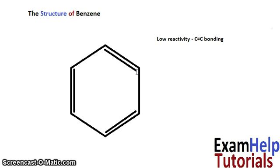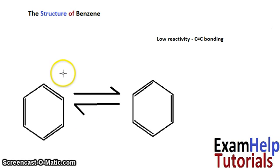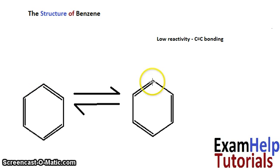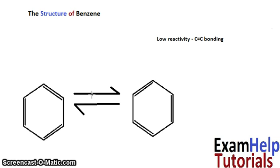What Kekulé proposed to explain this was an equilibrium: a reversible reaction rapidly changing double bonds to single bonds and back again, alternating so fast that bromine doesn't get a chance to react with the carbons. But in chemistry, reality tends to be fairly simple and logical, so if we're overcomplicating things it's probably wrong — and this equilibrium idea didn't really take off.